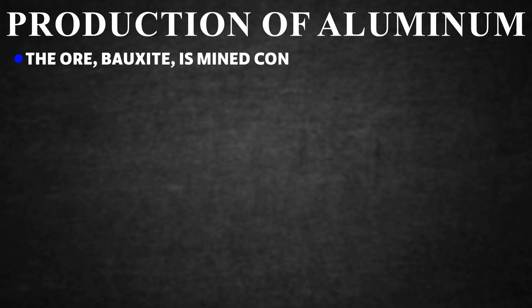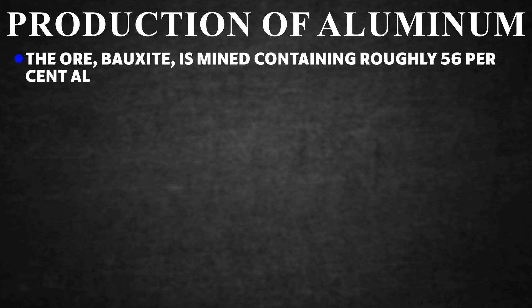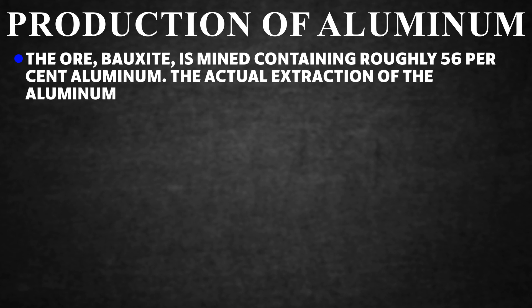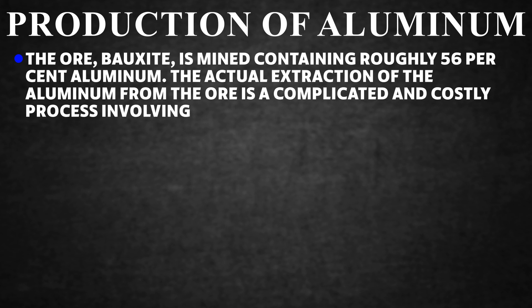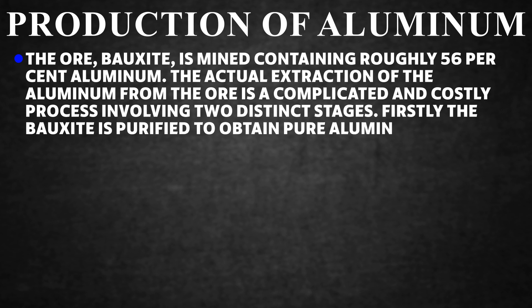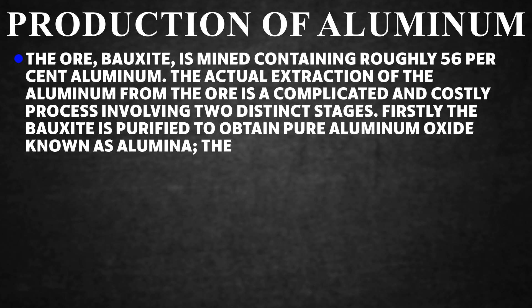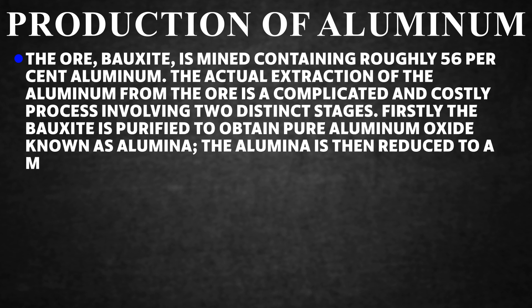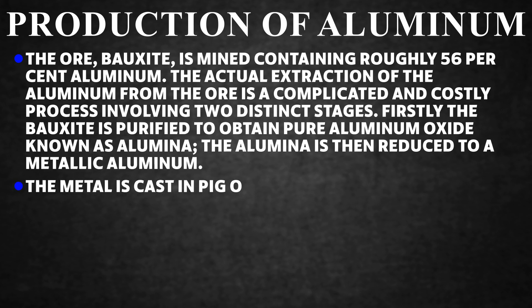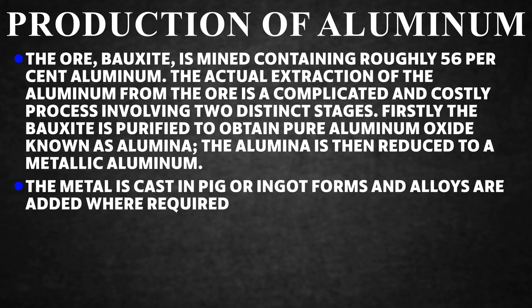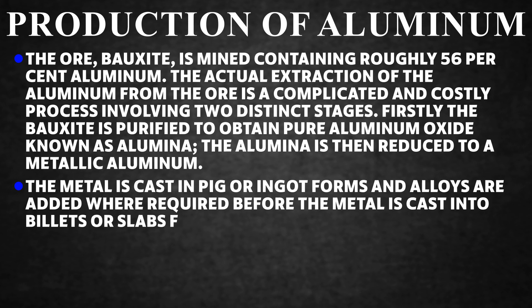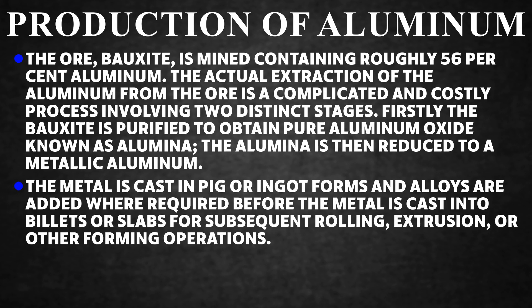Production of Aluminium. The ore bauxite is mined, containing roughly 56% aluminium. Extraction involves two stages: first, the bauxite is purified to obtain pure aluminium oxide known as alumina; second, the alumina is reduced to metallic aluminium. The metal is cast in pig or ingot form, alloys are added where required, and the metal is cast into billets or slabs for subsequent rolling, extrusion, or other forming operations.